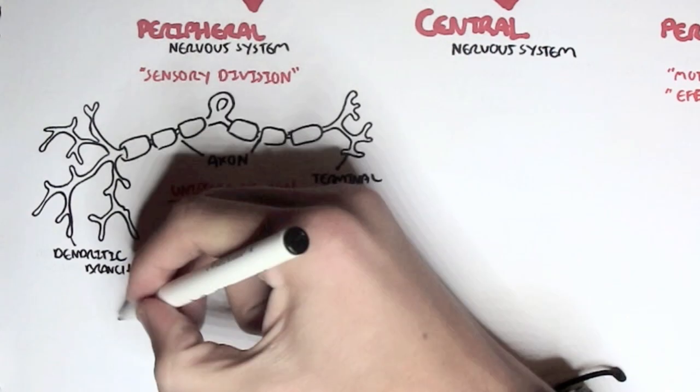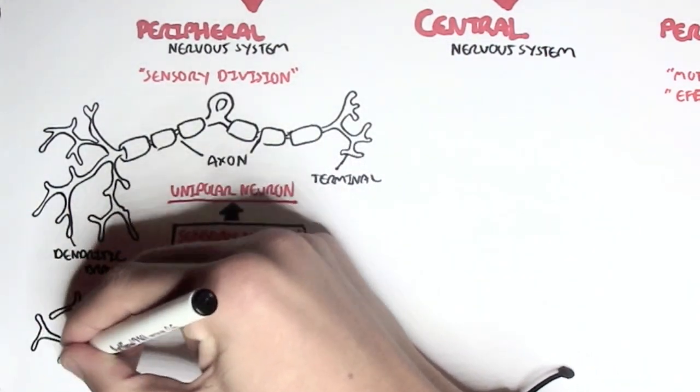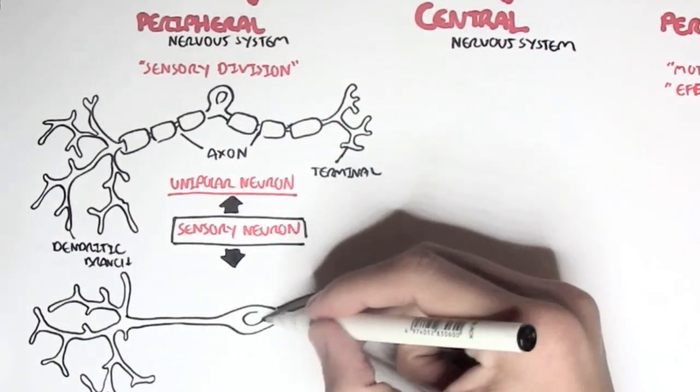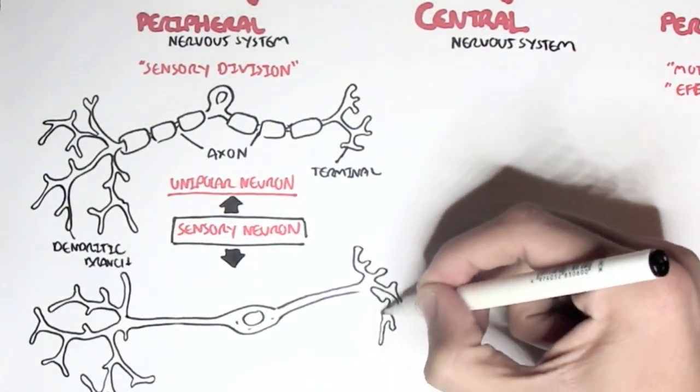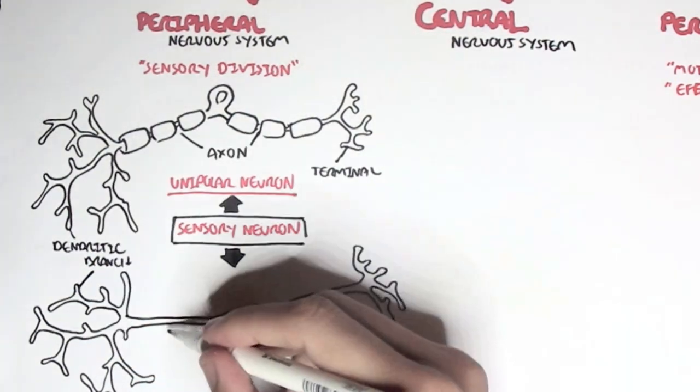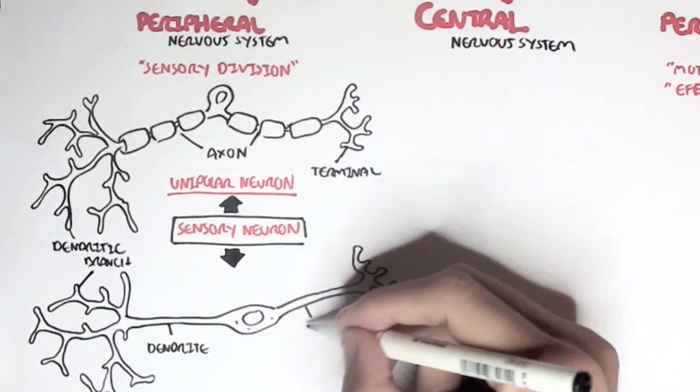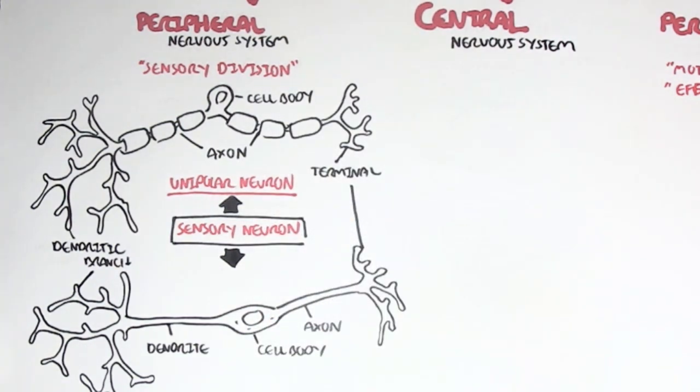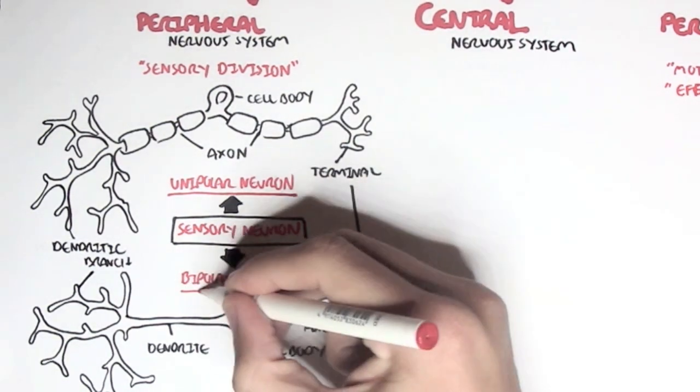Now we also have another type of sensory neuron which is slightly similar in that it also consists of dendritic branches, but the dendrite will extend to the soma. Then we have the axon and finally the synaptic terminal. This type of neuron is categorized under the structure of a bipolar neuron.